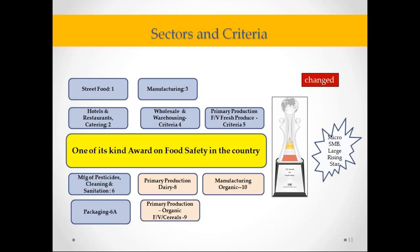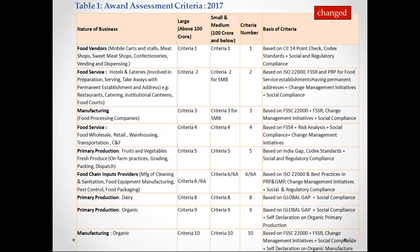We are proud to say that this year we have introduced three new categories — shown in pink: primary production dairy (criteria 8), primary production organic for fruits, vegetables and cereals (criteria 9), and manufacturing organic (criteria 10). We started in 2011 with just three criteria; now in 2017 we have 10. Table one has been revised to reflect all 10 categories, so please go by this updated table. If it is a dairy primary production, it's criteria number 8; primary production organic is number 9; and manufacturing organic is number 10.